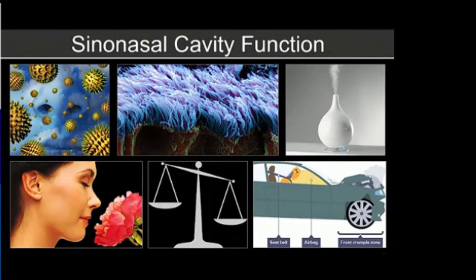The sinonasal cavity has a number of different functions. The paranasal sinuses primarily filter the air that we breathe — essentially filtering all of the debris and pollen as we inhale. It also humidifies and warms the air before it goes down to the lungs, and is very important for olfaction. It also helps decrease the overall weight of the skull and provides a crumple zone, so the paranasal sinuses essentially protect the intracranial cavity in an accident.